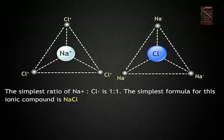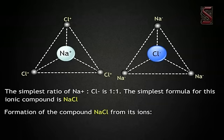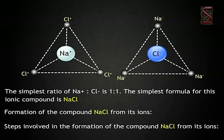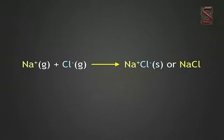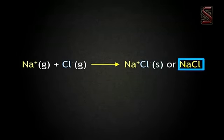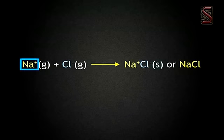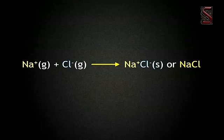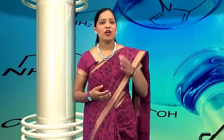The simplest ratio of Na⁺ to Cl⁻ is 1:1, so the simplest formula for this ionic compound is NaCl. The steps involved in the formation of NaCl from its elements are: transfer of electrons between Na and Cl atoms to form Na⁺ and Cl⁻ ions. These oppositely charged ions get attracted towards each other due to electrostatic forces and form the compound sodium chloride, NaCl. There are many compounds which have ionic bonds; they are called ionic compounds and are formed when a metal reacts with non-metals.